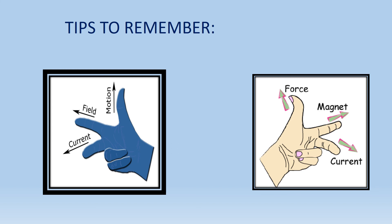Right hand rule: the thumb finger shows motion — that is movement. Left hand rule: the thumb shows force. So the easiest way to differentiate Fleming's right hand rule and Fleming's left hand rule is to remember that the thumb in the right hand rule means motion, and in the left hand rule means force.